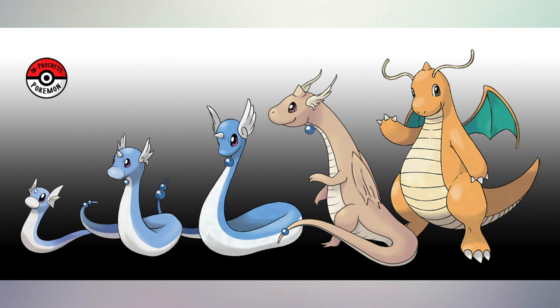Number nine, again five evolutions: between Dratini and Dragonair, and Dragonair and Dragonite. Dratini and Dragonair don't really need a middle evolution, but Dragonair and Dragonite are two completely different-looking Pokemon. It doesn't really make sense how a Dragonair would turn into a Dragonite, but that middle evolution shows Dragonair slowly turning into a Dragonite. What kind of name would you give these Pokemon?